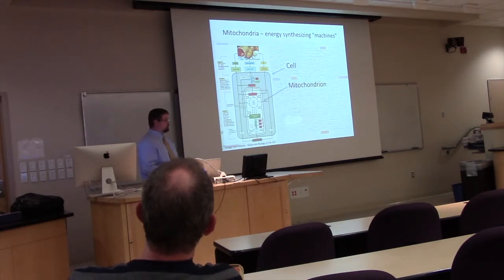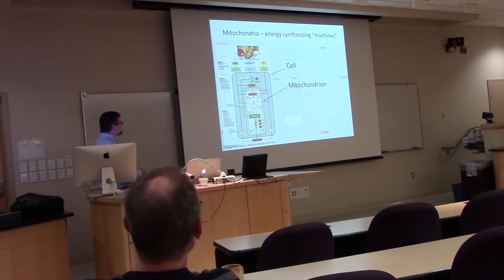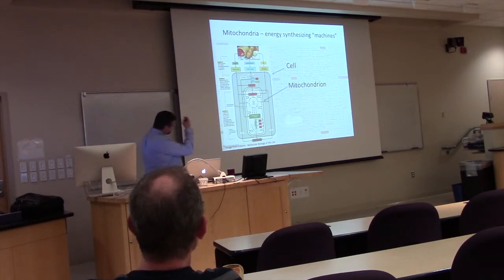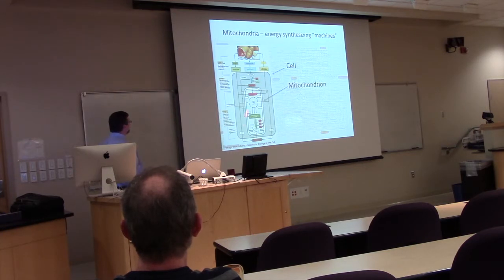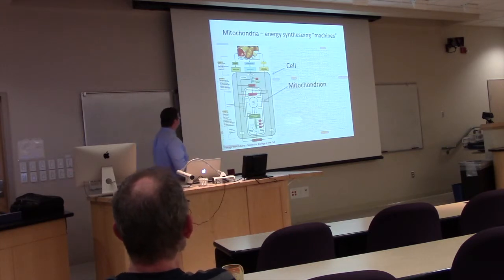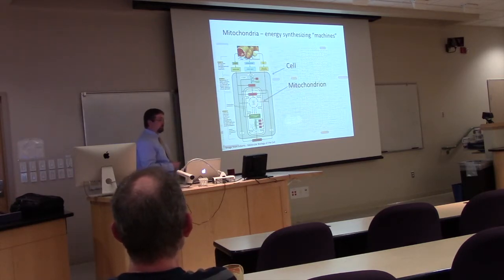How do mitochondria produce energy? Intermediate metabolism pathways convert carbohydrates, proteins, and fats into energy. These go through intermediary pathways in the cytosol to produce things like pyruvate, which then enters the mitochondria and participates in the TCA cycle, producing much more ATP than just the glycolysis cycle alone.